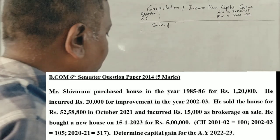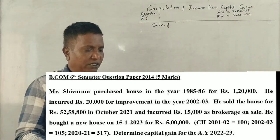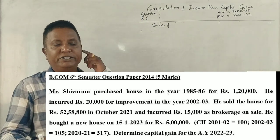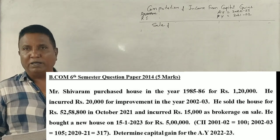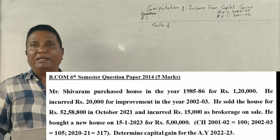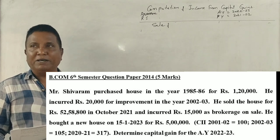This is a 2014 question paper problem. Mr. Shivaram purchased a house in the year 1985-86. The problem involves calculating capital gains when this house is eventually sold.